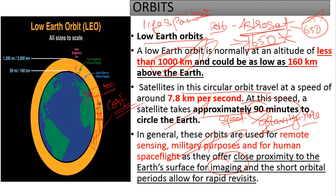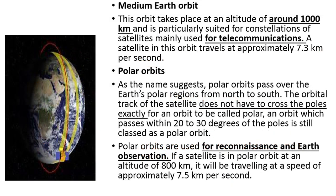So remember: the altitude is less than 1,000 km, the speed of the satellite is greater — it covers the earth approximately in 90 minutes — and because of the close proximity to the earth's surface it is used for earth imaging, as the camera can give good clarity shots. This is all about low earth orbit.